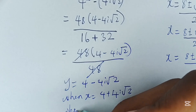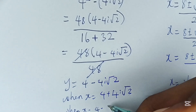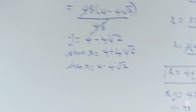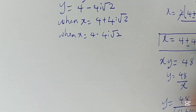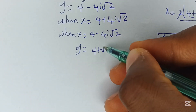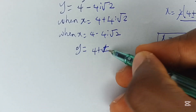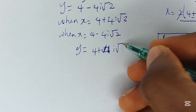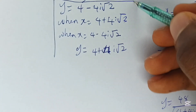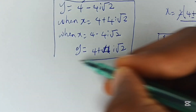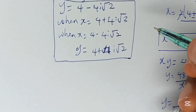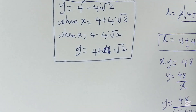Hence when x is equal to 4 minus 4i root 2, y will become equal to 4 plus 4i root 2. So these are the answers to this given question. Thanks for watching.